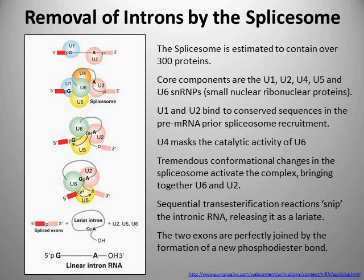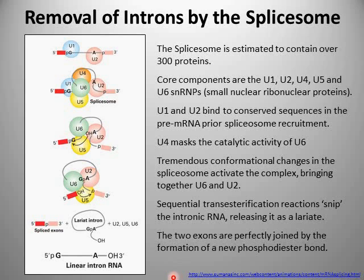This lariat structure — this loop of intronic RNA — is then rapidly degraded and the constituent parts reused in further rounds of transcription. At the end you're left with a degraded lariat intron plus the two exon regions joined together. To reiterate the key points: it's sequential transesterification reactions that snip the intron at either end, and then a new phosphodiester bond joins the two exons together. The intronic RNA removed as a lariat structure is degraded. There's a link to a video that does a nice job of explaining this process via animation.